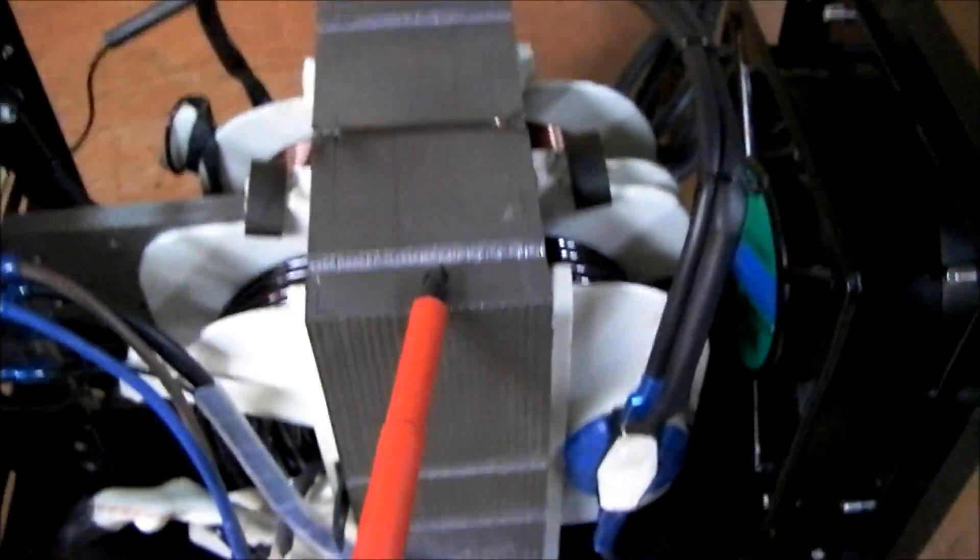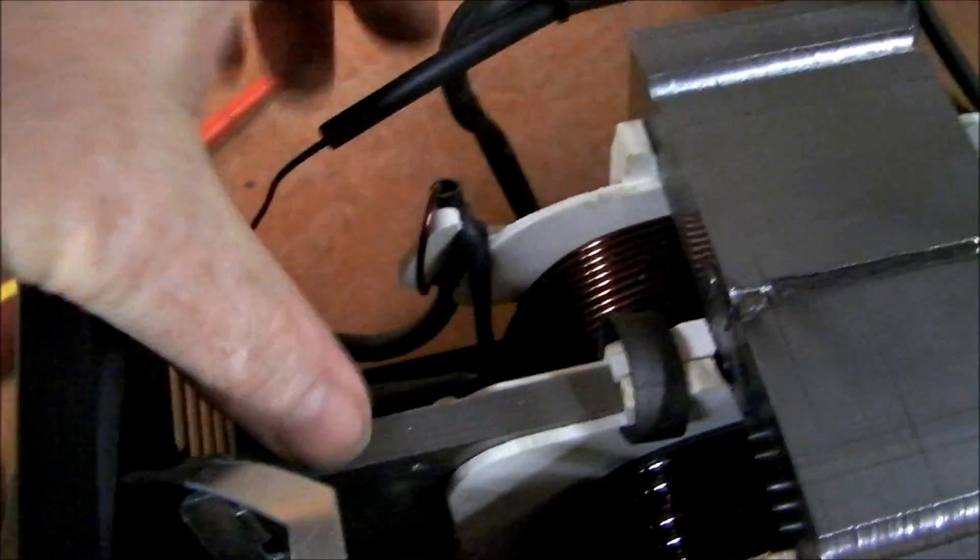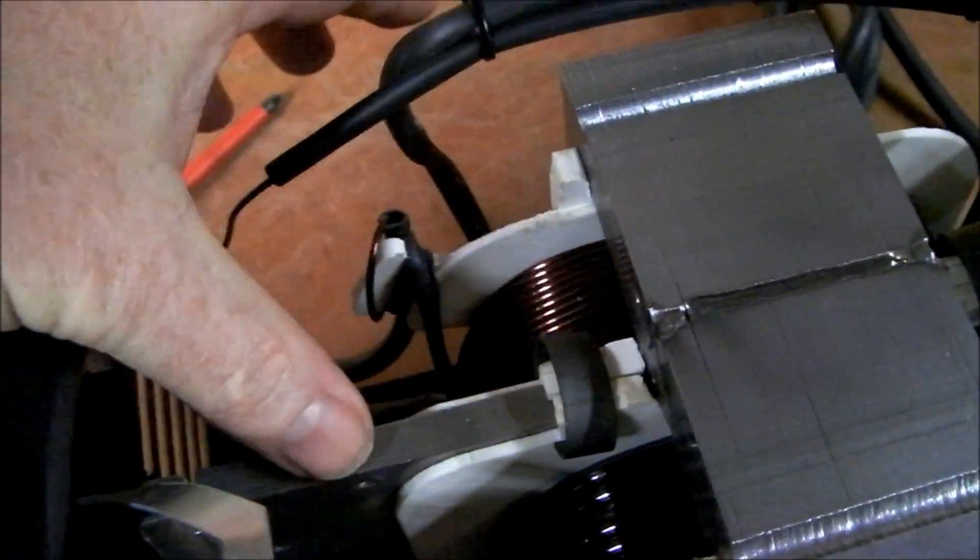Now, here we have the transformer, as you can see yourself. The primary coil over here. The secondary coil over here. And here we have the magnetic shunt.